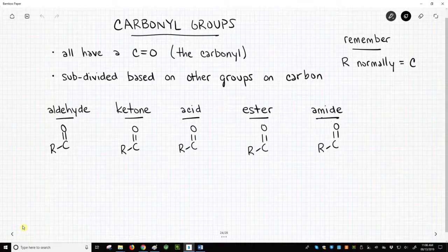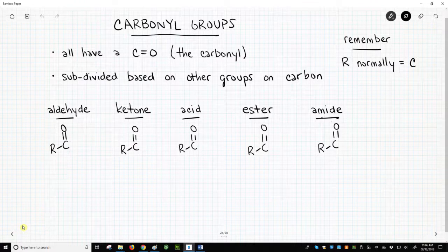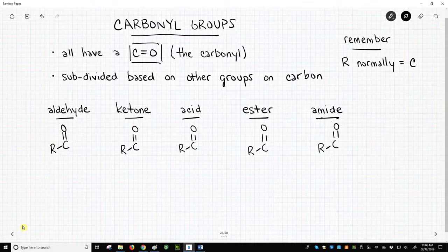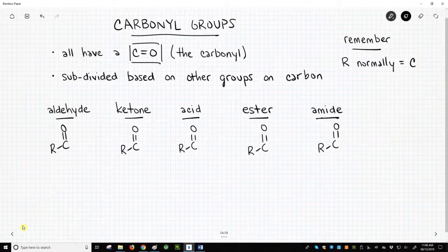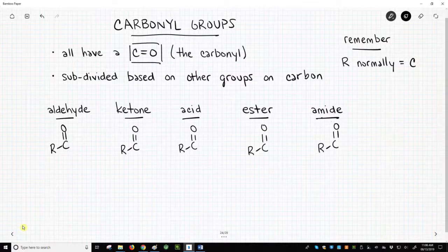Carbonyl is a carbon-oxygen double bond. A carbonyl is a functional group. Remember that carbon makes four bonds, so the carbonyl carbon will be bonded to two more things. Carbonyls can be further subdivided based on the identity of the other groups bonded to the carbonyl carbon.